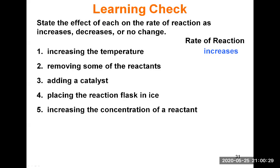Removing some of the reactant decreases the concentration of the reactant, which decreases the chance for collisions — so this decreases the rate of reaction. There will be fewer chances for collisions, and the reaction will be slower. Adding a catalyst increases the rate of reaction; catalysts are used specifically to make reactions faster by lowering the activation energy.